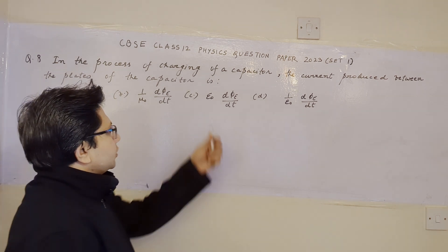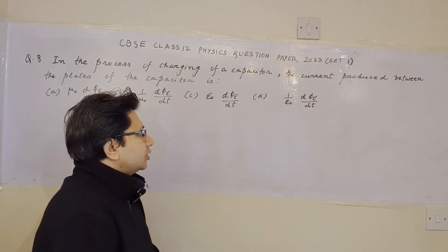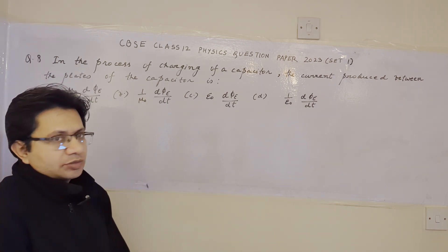option C, epsilon0 d by dt of phi sub e, and option D, 1 upon epsilon0 d by dt of phi sub e.